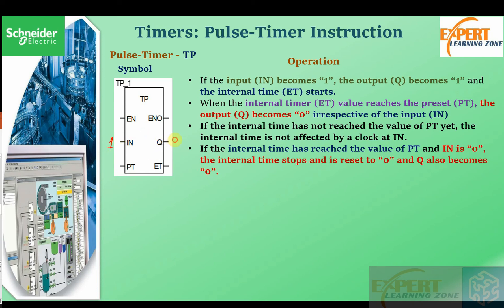This means that a logic one on the input IN is going to start the timer. When you start the timer, Q becomes one and the internal timing starts. The internal timing will count up to the preset value, which you determine. When the internal timer value reaches the preset value, the output becomes zero. The output becomes zero irrespective of the state of the input.